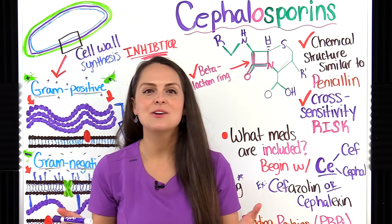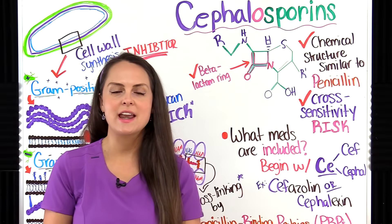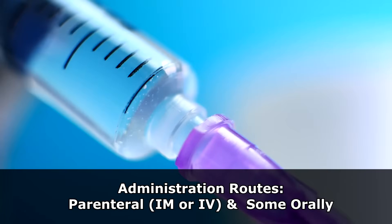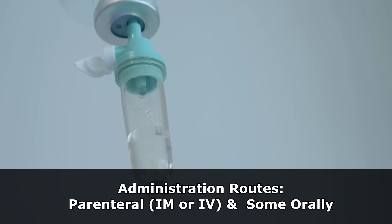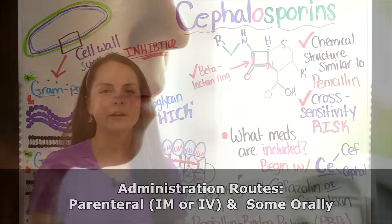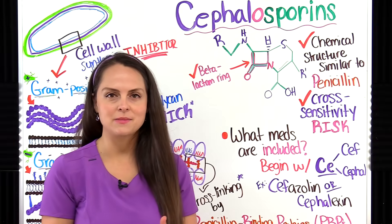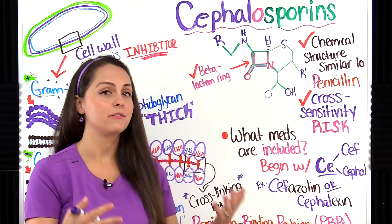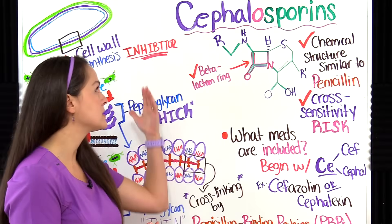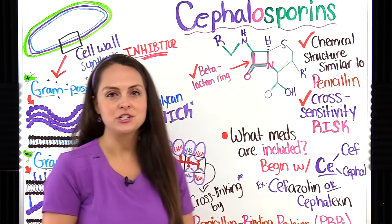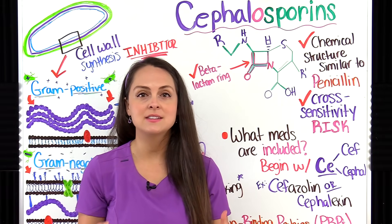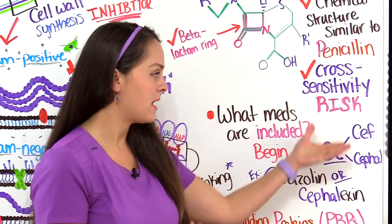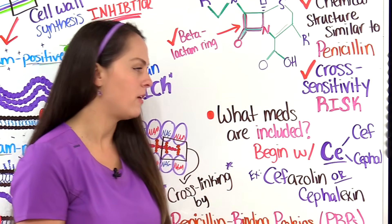What medications are considered a cephalosporin and how do you expect to administer them as a nurse? Typically they are administered parenterally — so IM or IV — or orally. Whenever you're trying to recognize them on a patient's medication list, it's fairly easy because since we're dealing with cephalosporins, majority of those generic names are also going to have 'CE' at the beginning of them. You'll either see 'ceph' like C-E-F or C-E-P-H-A-L.